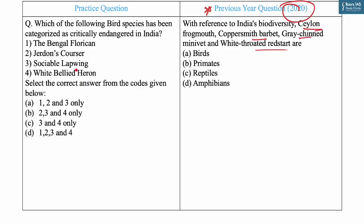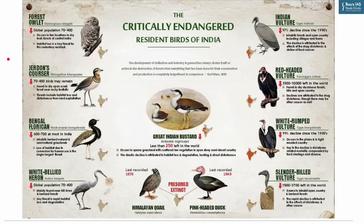Today's MCQ asks: which of the following bird species has been categorized as critically endangered in India? The options are: (1) Bengal Florican, (2) Jerdon's Courser, (3) Sociable Lapwing, and (4) White-bellied Heron. Select the correct answer from the codes given.